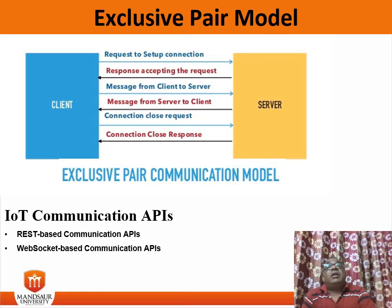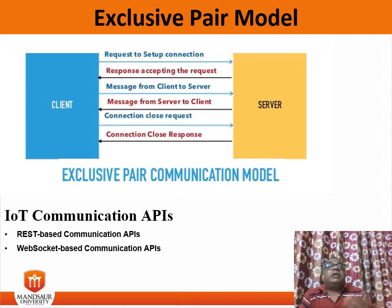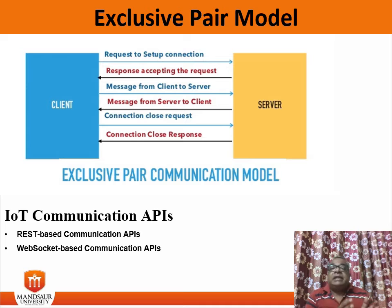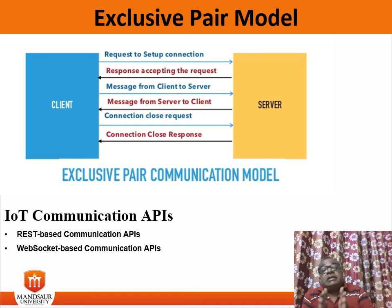Now the third part of IoT is IoT communication APIs. Generally we use two APIs for IoT communication: REST-based communication APIs and WebSocket-based communication APIs.